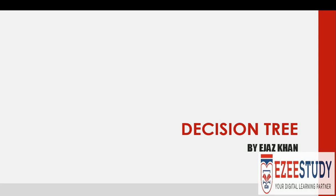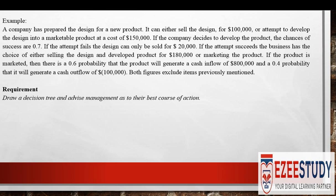Hello everyone, this is Ajaz Khan. In today's video we will be discussing how to use decision trees in decision making with risk and uncertainty. The decision tree technique is basically used where a company has to make a complex decision in a risk and uncertainty situation. Let's understand it with the help of an example.